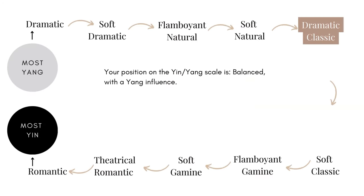As noted previously, the Kibbe system is a measure of yin and yang, with yang being sharpness and elongation and yin being the softer element — softness and roundness. The position of the Dramatic Classic on that scale is balanced with a yang influence.